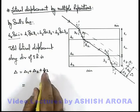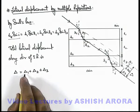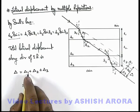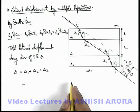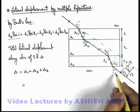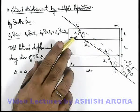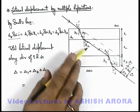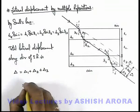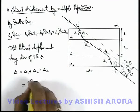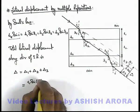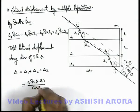For a single slab, so here all the three can be individually added in the direction of incidence angle i. The only difference is refraction angle should be r1, r2, and r3. So here it'll be t1 sin(i - r1) by cos r1.